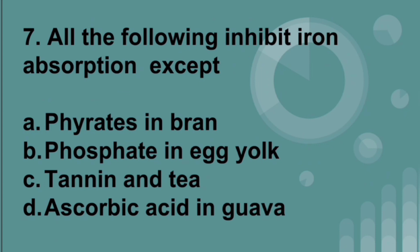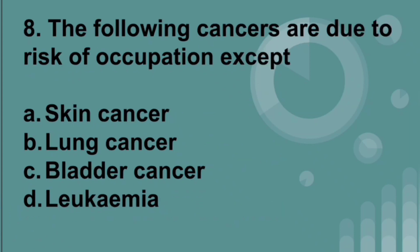All of the following inhibit iron absorption except ascorbic acid. Ascorbic acid is vitamin C, which promotes the absorption of iron, whereas the rest of the options do not. The following cancers are due to occupational risk except leukemia.